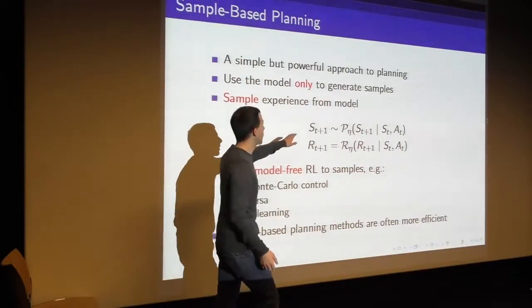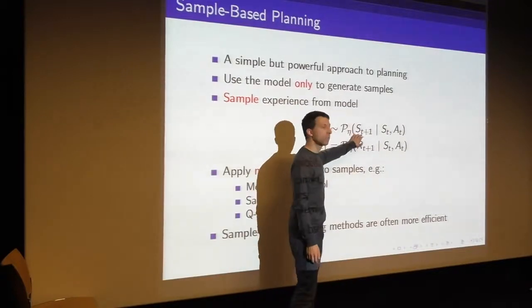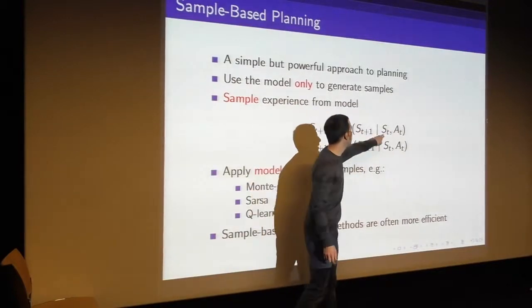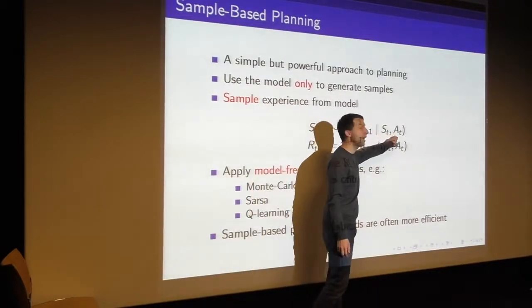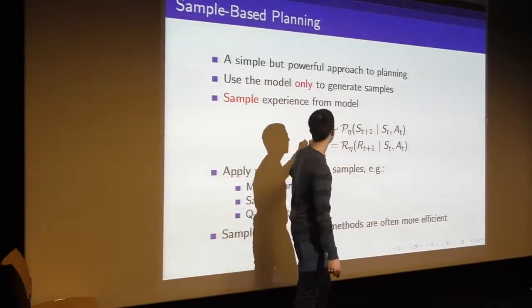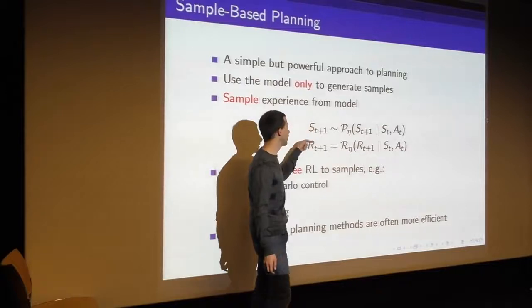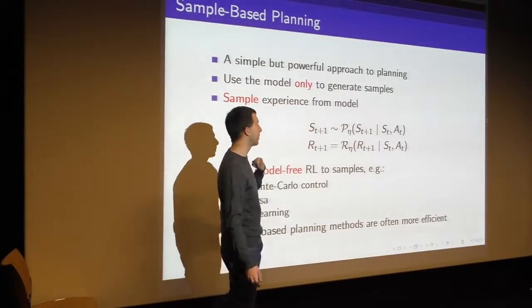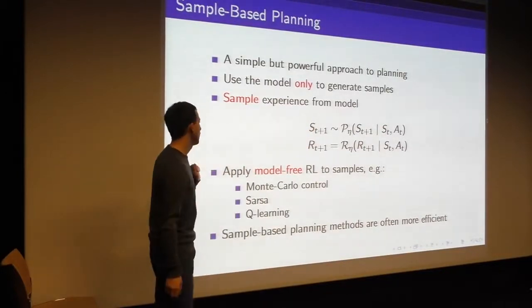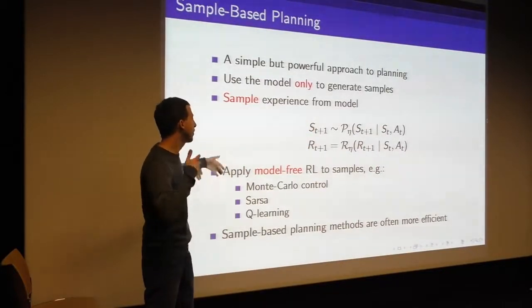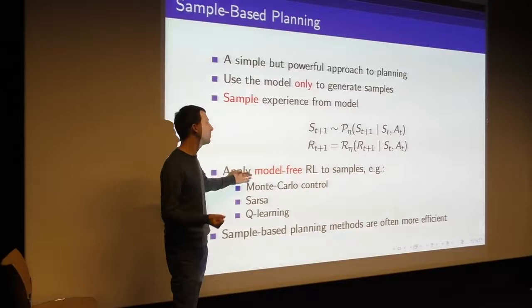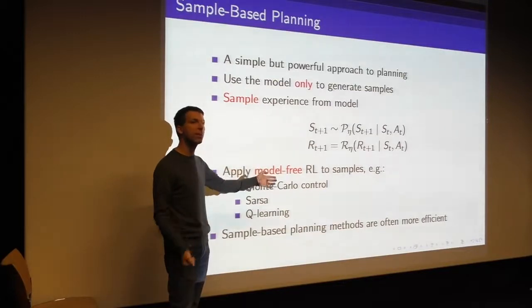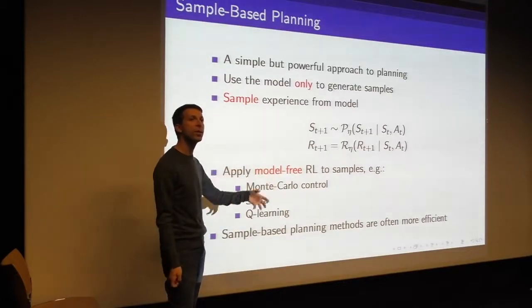So we sample a next state. If we're in some state S and take action A, I'm going to sample the next state and I'm going to sample the reward from the model. And then I'm just going to apply our familiar model-free reinforcement learning to those samples.